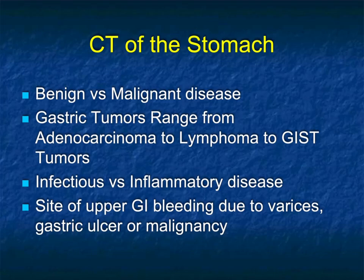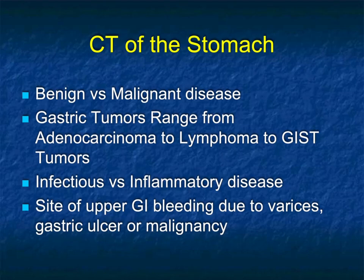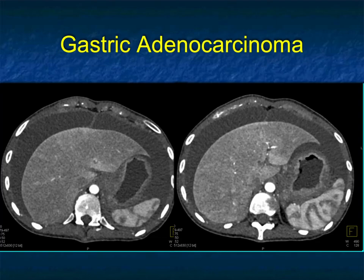We have lectures given in the past year or two on benign versus malignant disease in the stomach. We'll typically talk about things like tumors — adenocarcinoma, lymphoma, GIST tumors — and look at their specific features. We'll talk about infectious versus inflammatory disease, the role of CT in detecting GI bleeds from varices, benign ulcers, malignant ulcers, or malignancies like a GIST tumor.